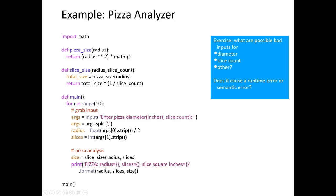The print uses the string format method — a great review for the exam. Format takes curly braces in the string and replaces them with variables from the parameter list. So it replaces the curly braces with the radius value, the slice count, and the size, printing out the important details about our pizza.